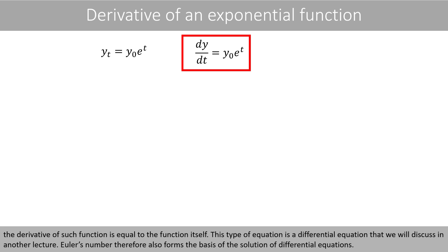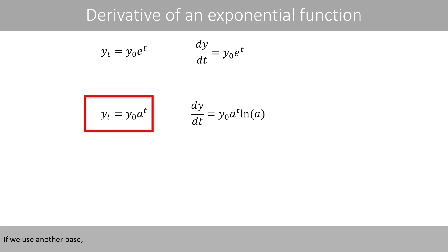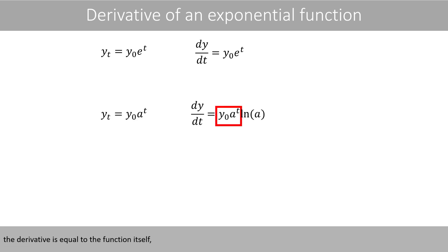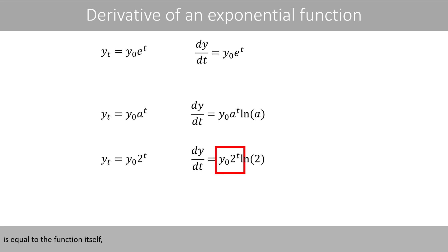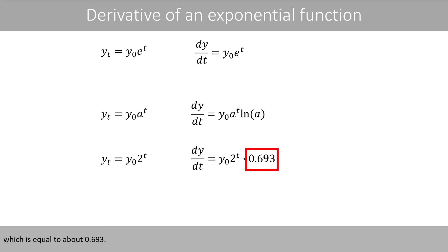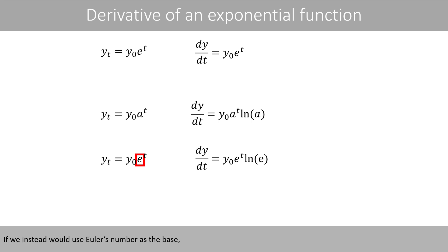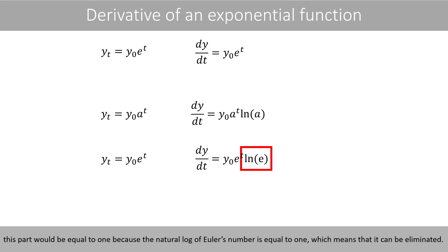This type of equation is a differential equation that we will discuss in another lecture. Euler's number therefore also forms the basis of the solution of differential equations. If we use another base, the derivative is equal to the function itself times the natural log of the base. For example, the derivative of this exponential function with the base 2 is equal to the function itself times the natural log of 2, which is equal to about 0.693. If instead we use Euler's number as the base, this part would be equal to 1 because the natural log of Euler's number is equal to 1, which means that it can be eliminated.